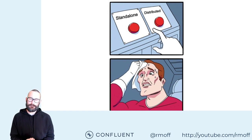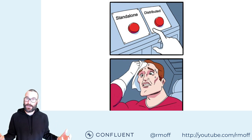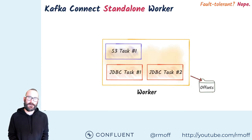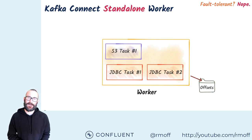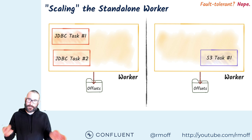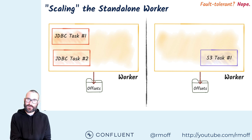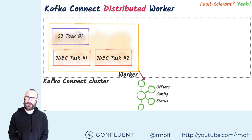It's worth understanding this carefully because you may not choose the one you'd guess is appropriate. Standalone is not usually what I would recommend, even on a single node. The standalone worker is not fault tolerant at all — if it dies, you lose your stuff. It's not scalable either. If you want to add additional capacity, you have to set up a separate worker and manually partition your connectors across them. If you need to scale ingest, you can't because you have one worker running one connector.